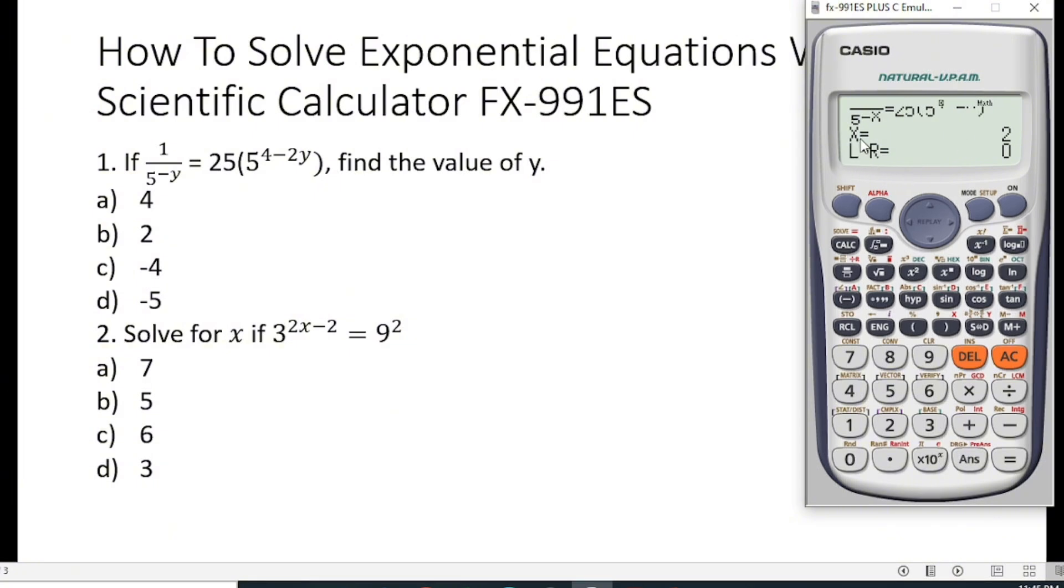So you can see that it has given us x is equal to 2. And when we are solving, we said we should let y equal to x. So automatically we can see that the value of y is equal to 2. And when we check our options, we can see that option b is the right answer for question 1.